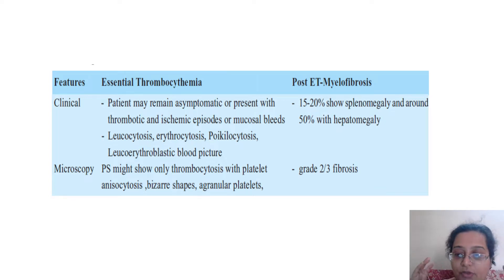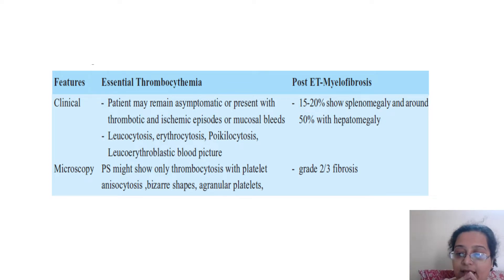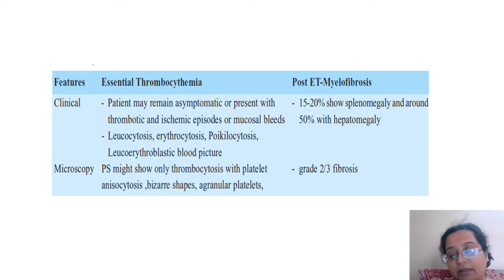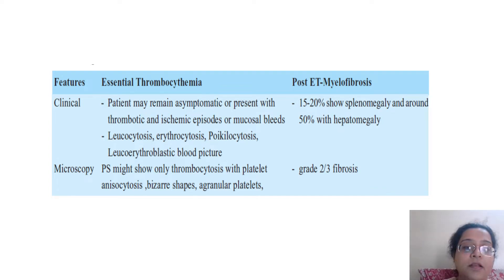I've read the entire WHO and recent advances and compiled them as tables. I've presented ET alongside post-ET myelofibrosis because every MPN has a cellular phase and then a phase where the marrow becomes completely fibrosed. If you get a marrow biopsy at that fibrotic phase, you might confuse it with primary myelofibrosis. I'll discuss the fibrotic phase of each lesion and how not to confuse it with PMF.